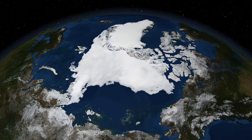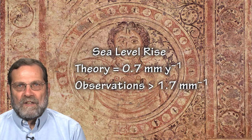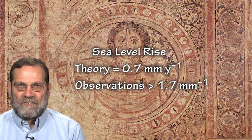Sea ice floating on the ocean, such as the Arctic ice pack, has a mass equal to the water it displaces. Therefore, melting of this sea ice does not significantly contribute to the volume of the oceans. Warmer global temperatures and the melting of continental ice sheets over the last century have increased the global volume of water in the oceans. These factors potentially could raise sea levels roughly 0.7 millimeters per year. Two independent approaches, however, indicate that sea levels are rising at more than twice this rate.